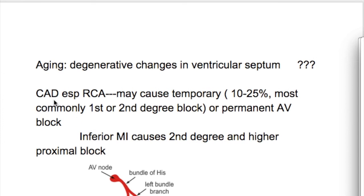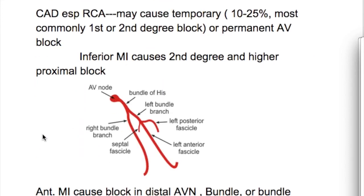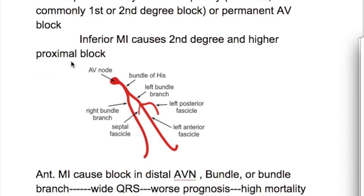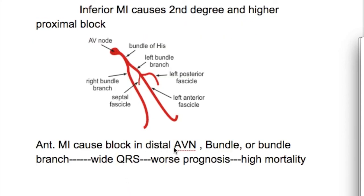In coronary artery disease, conduction block may be temporary or permanent. The right coronary artery is most commonly involved, affecting 10 to 25 percent of patients, and most commonly causes first and second degree block or permanent AV block. Inferior MI more commonly causes block, and it causes second-degree and higher proximal block. Anterior MI causes more dangerous block because it blocks the distal AV node or bundle branches.